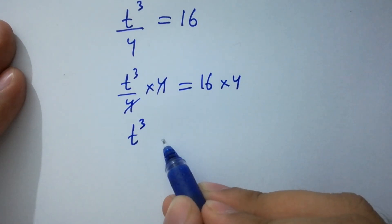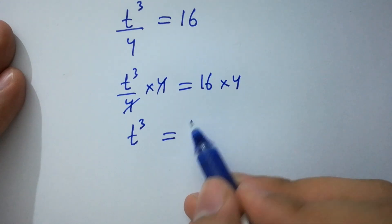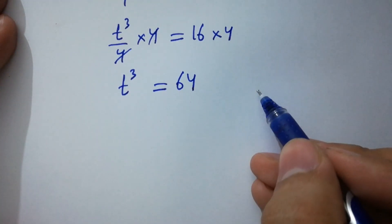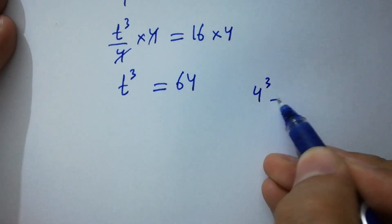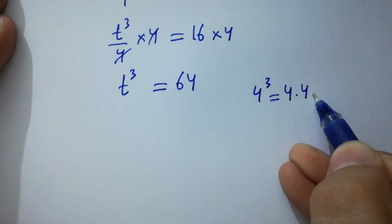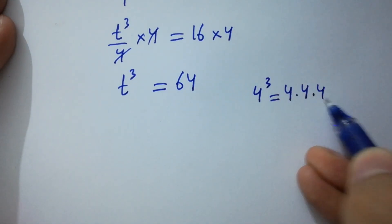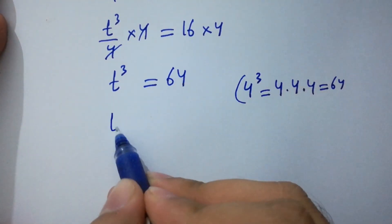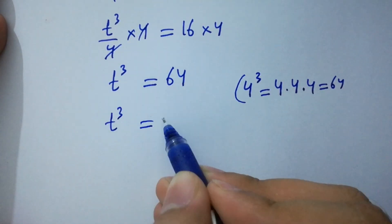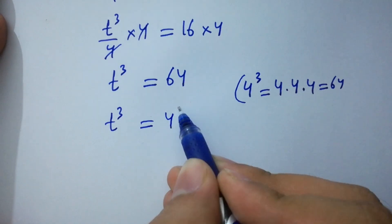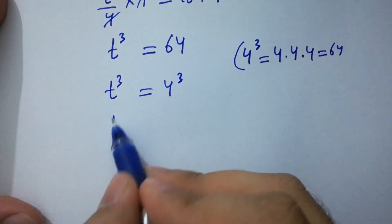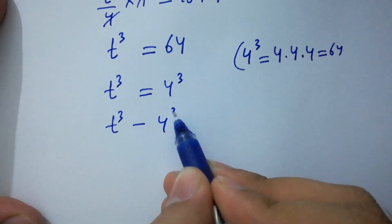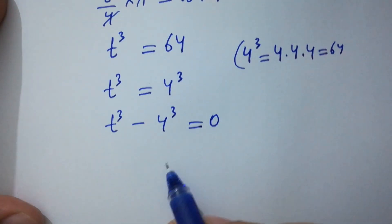We get t cubed equals 16 times 4, which is 64. And since 4 cubed is also 64, it will be t cubed equals 4 cubed. Therefore, t cubed minus 4 cubed equals 0.